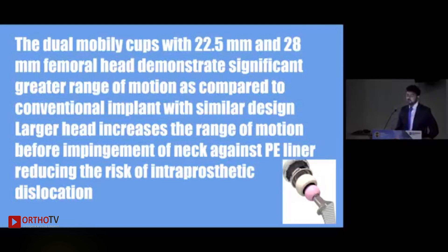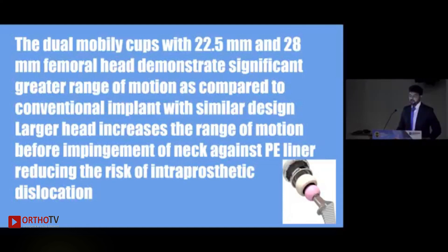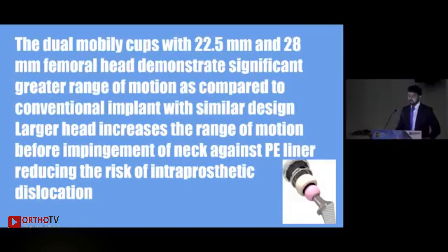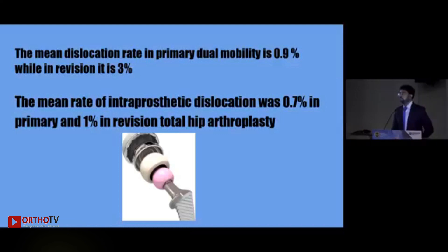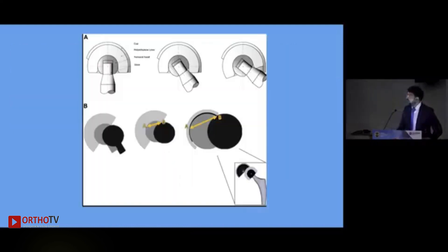Compared to a conventional THR with a similar design, as head size increases the range of motion improves while impingement of the neck against the polyethylene liner is reduced, lowering the risk of intra-prosthetic dislocation. The mean dislocation rate for a primary dual mobility hip is 0.9%, while in revision cases it is 3%. The mean rate of intra-prosthetic dislocation is 0.7% in primary and 1% in revision total hip cases.